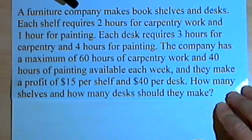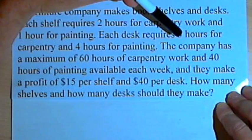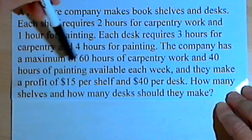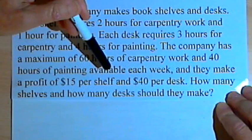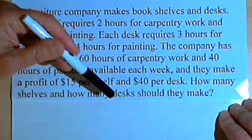So here's the problem. It says a furniture company makes bookshelves and desks. Each shelf requires two hours for carpentry work and one hour for painting. Each desk requires three hours for carpentry and four hours for painting. The company has a maximum of 60 hours of carpentry work and 40 hours of painting available each week. And they make a profit of $15 per shelf and $40 per desk. How many shelves and how many desks should they make?